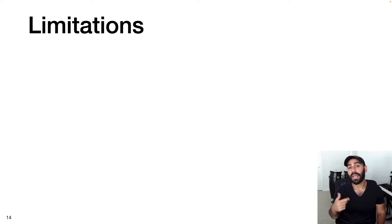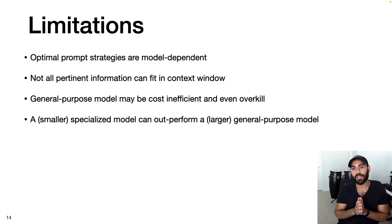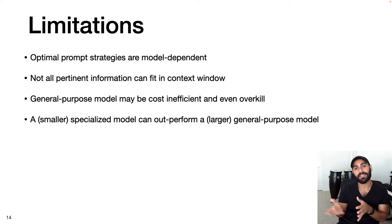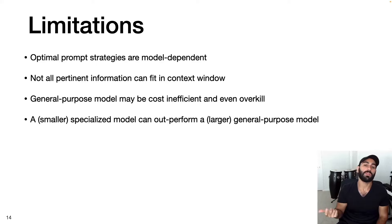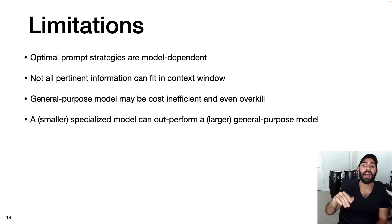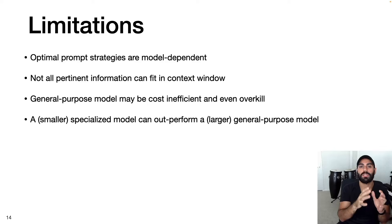I would be remiss not to talk about the limitations of prompt engineering. First, optimal prompt strategies are model dependent — what works for ChatGPT may be completely different from what works for GPT-3. Second, not all pertinent information may fit into the context window. Third, the large general-purpose models used for prompt engineering can be cost inefficient or overkill for specific use cases. And smaller specialized models can outperform larger general-purpose models, as demonstrated by OpenAI when comparing their smaller InstructGPT model to a much larger version of GPT-3.